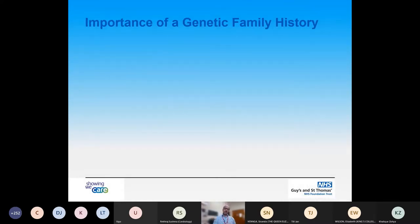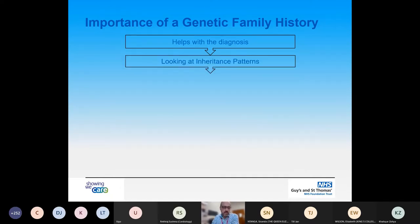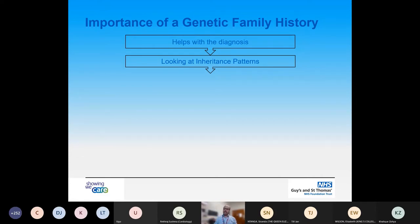Why is it important to undertake a genetic family history? Firstly, it helps with diagnosis. It allows us to refine or define a particular diagnosis in the family. We can look for similar related features and symptoms and establish if they are correlated, which may lead us to finding a diagnosis within the family. It can also help identify if there are single or multiple gene conditions within the family, identify the variability of how these conditions express themselves, and may lead to offering genetic testing for the patient.